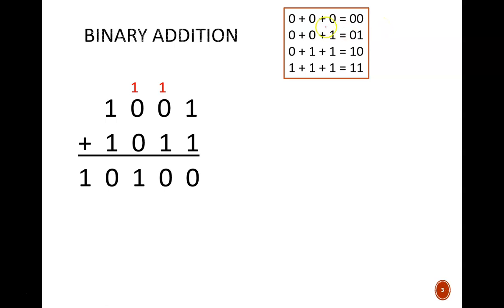If all the inputs are 0, the output sum is 00. If just one input is 1, the sum is 01. If two inputs are 1, the sum is 10. This is where many people get tripped up. They think 1 plus 1 is 2. That is certainly correct in decimal, but since we are in binary, that is written as 10.